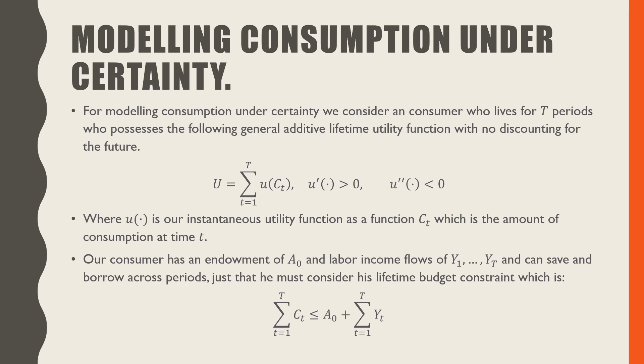Our consumer has an endowment of A₀ and labor income flows of Y₁ to Y_T and can save and borrow across periods, just that he must consider his lifetime budget constraint, which is defined as the summation of all consumption over all periods must be less than or equal to this endowment plus the lifetime labor flows of all income Y_t, where t goes from 1 to capital T.